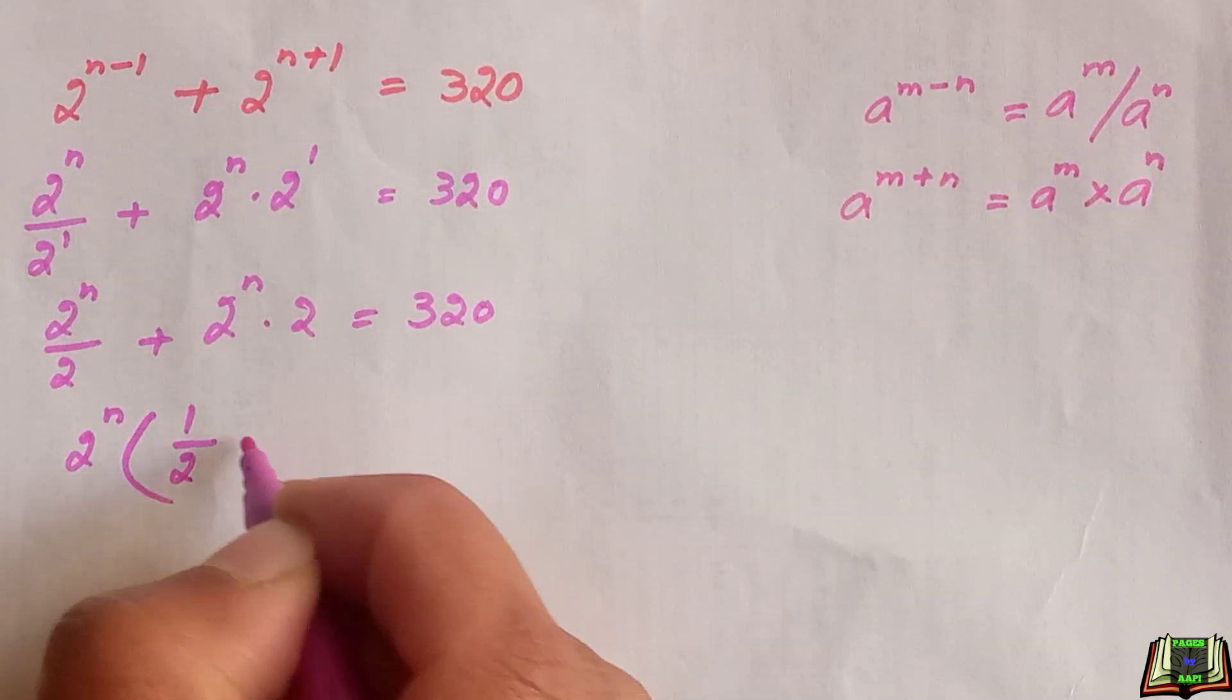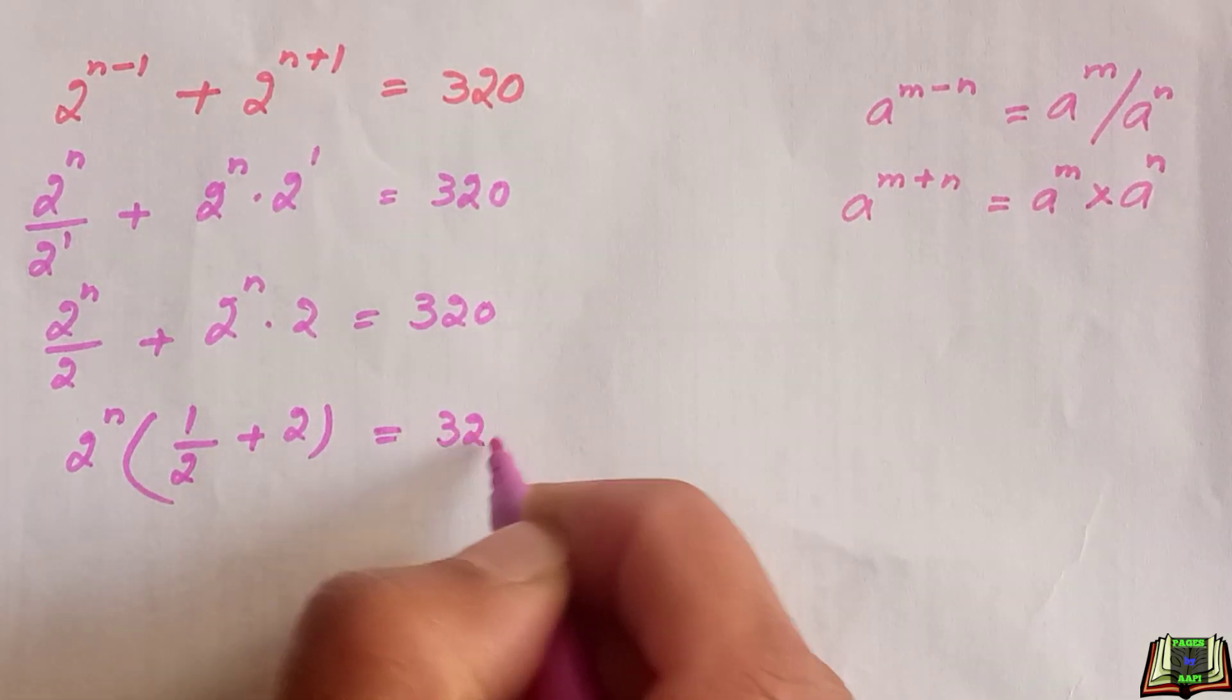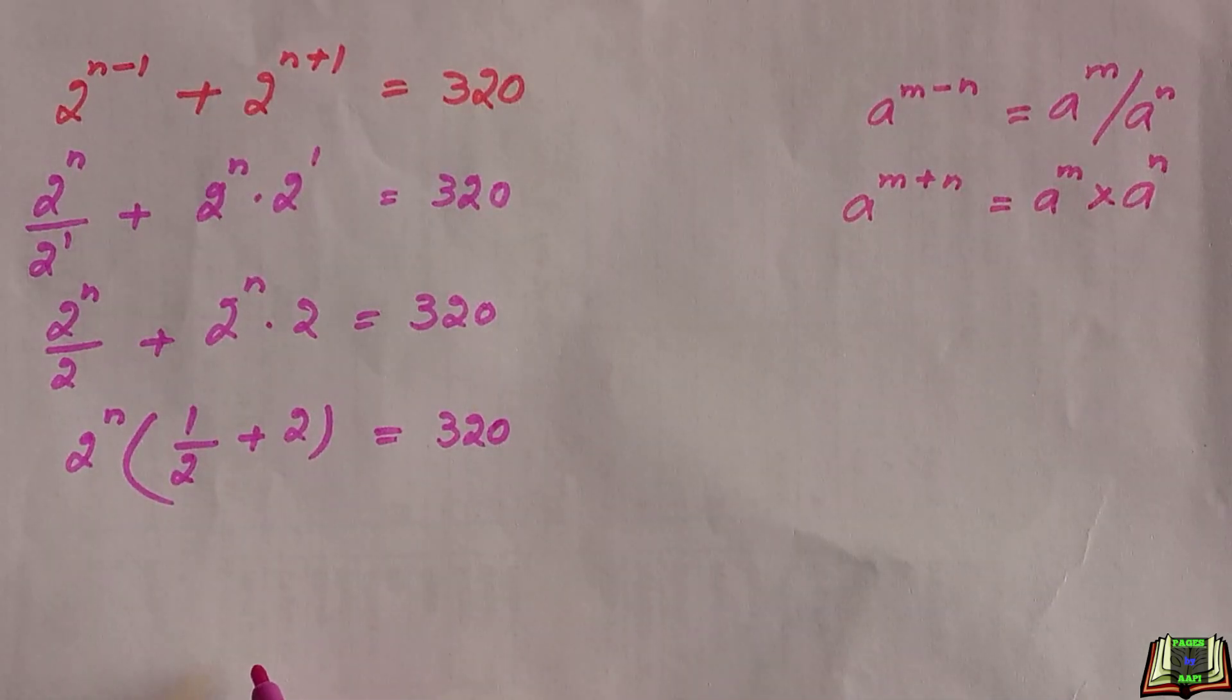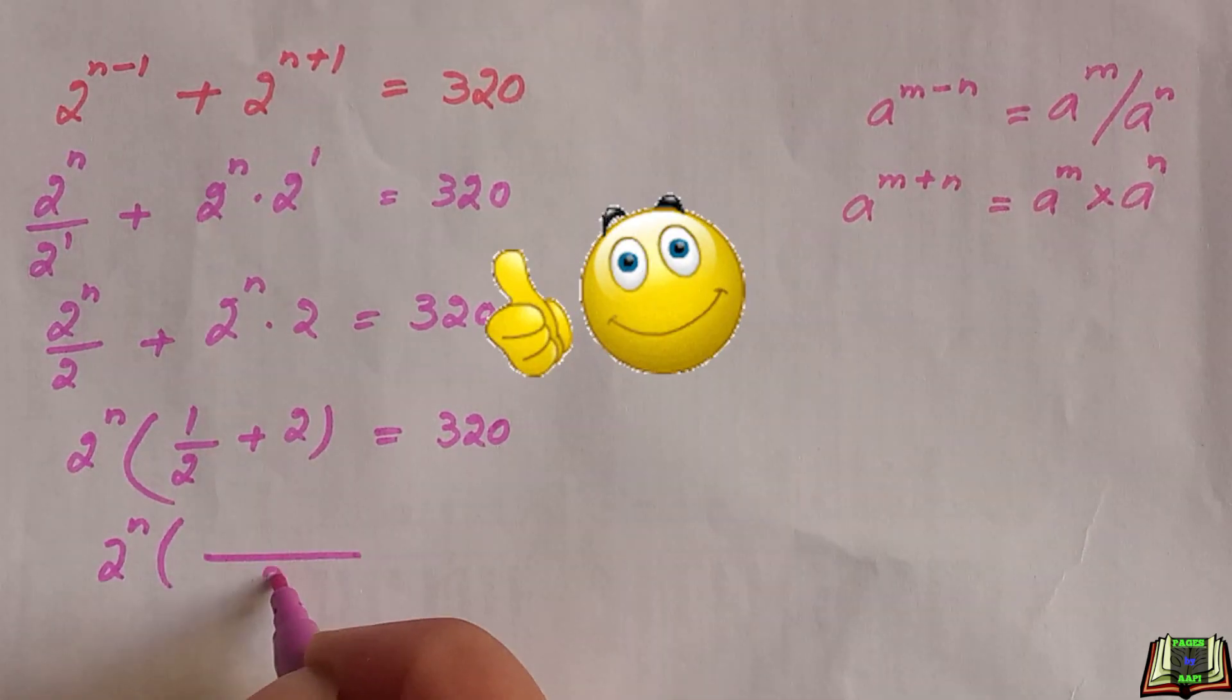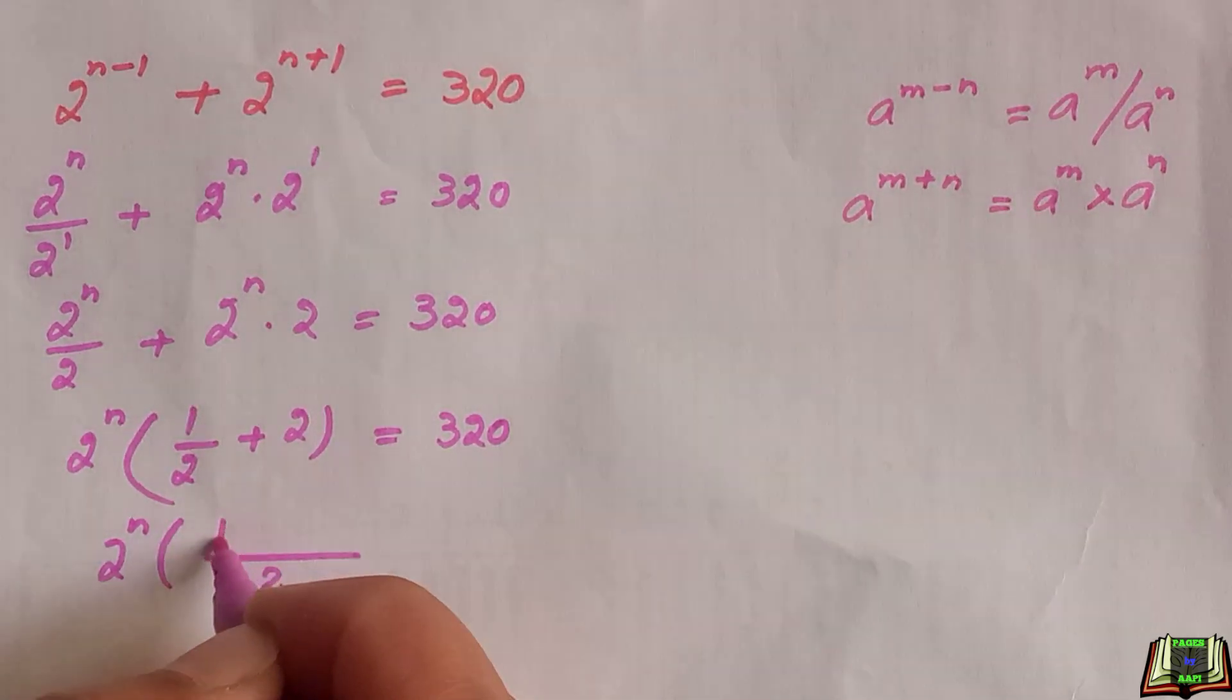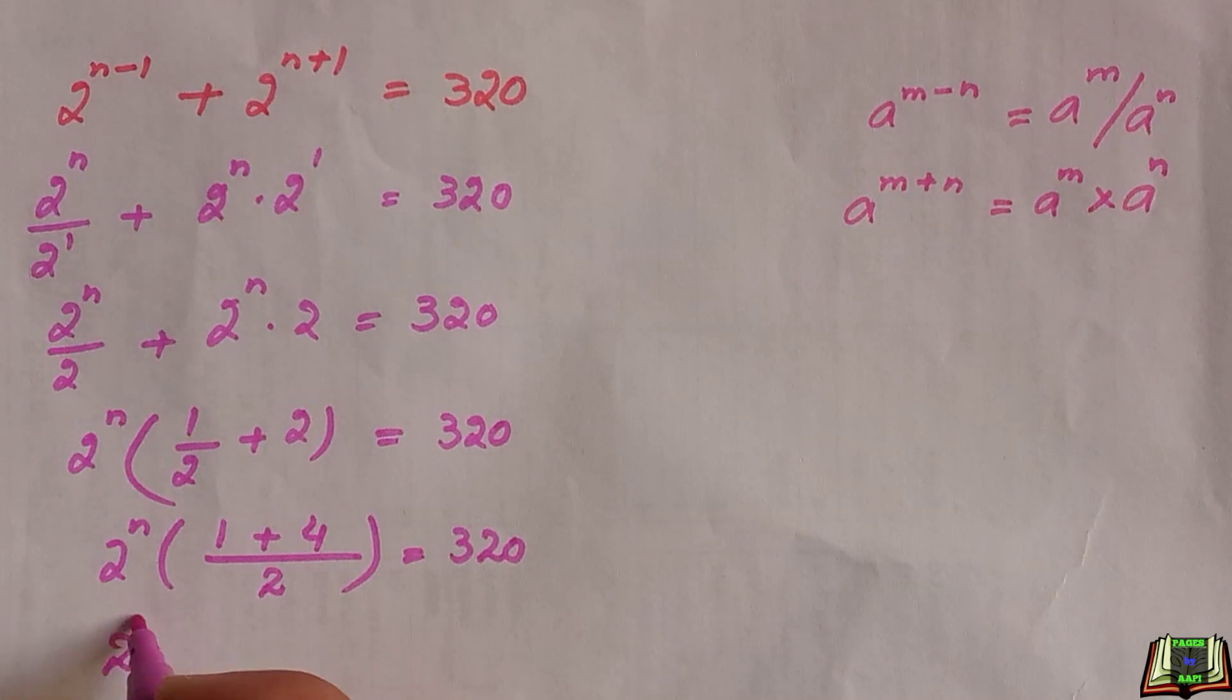And inside the bracket we have 1 over 2 plus 2. We are going to solve the bracket now by taking LCM. The LCM is 2. 2 times 1 is 2, and 2 times 2 is 4. 1 plus 4 is equal to 5. So we have 5 divided by 2.